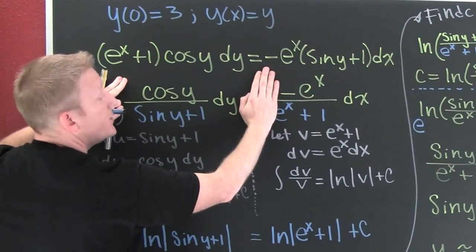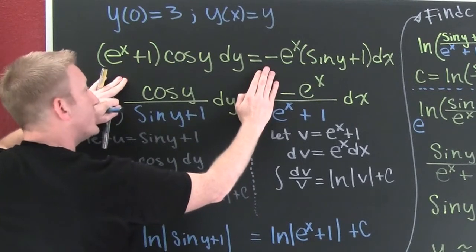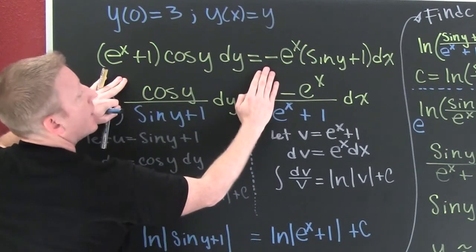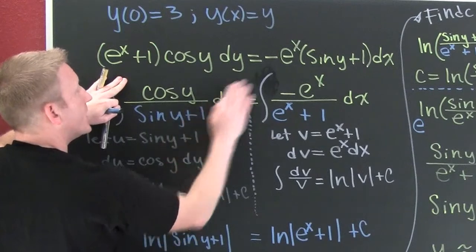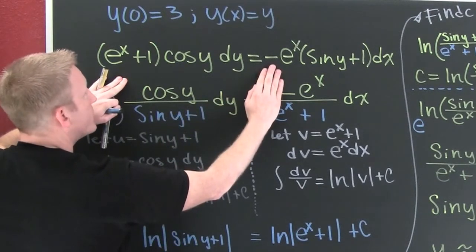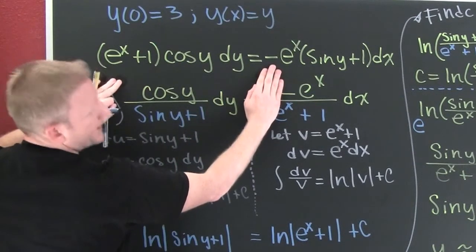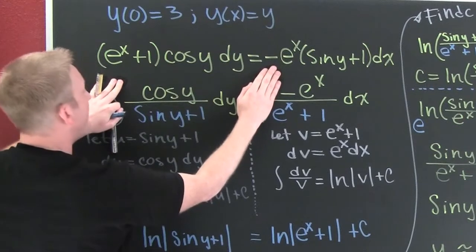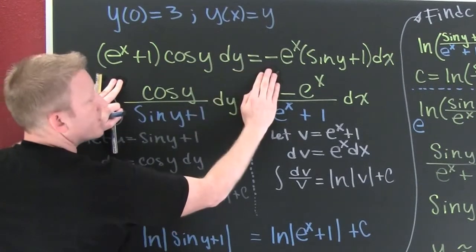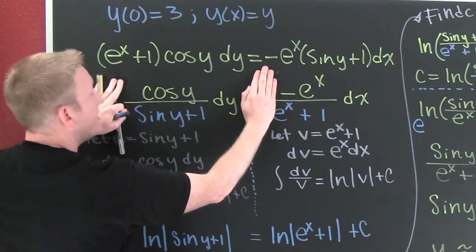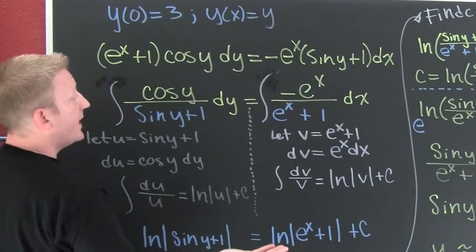So what did I do? New is in blue. I divided both sides by sine of y plus 1, and that's how it got down there. And I divided both sides by e to the x plus 1, and that's how it got down there. Now that I have something entirely of y and something entirely of x, I can integrate each side.